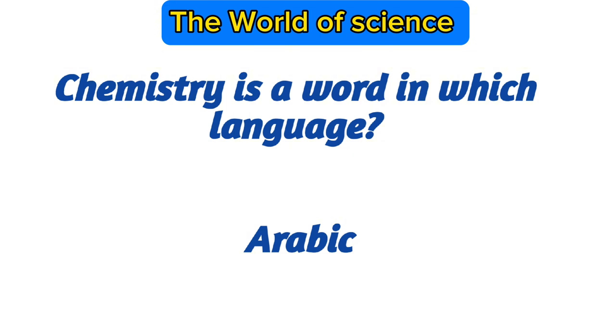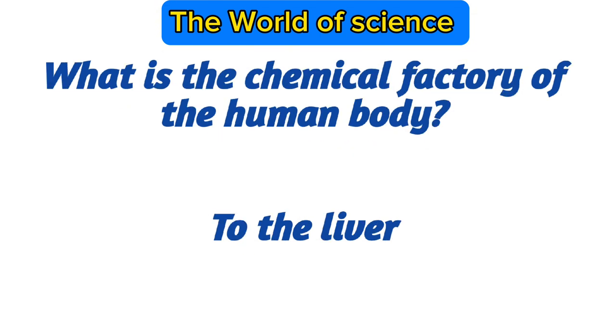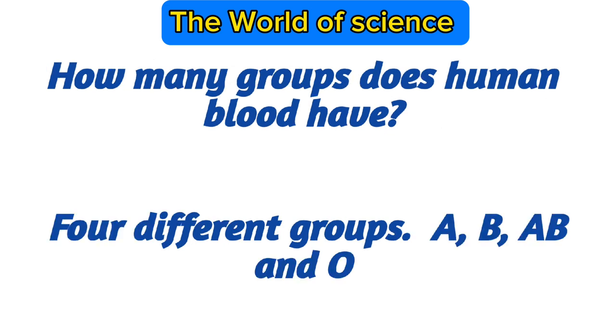Arabic. What is the chemical factory of the human body? Liver. How many groups does human blood have?